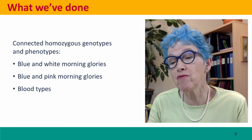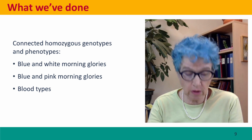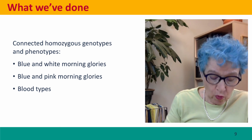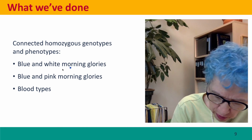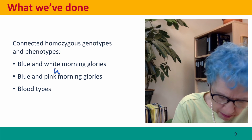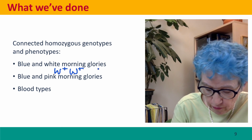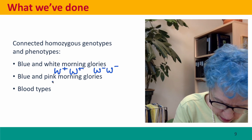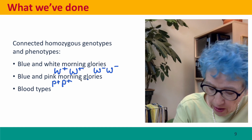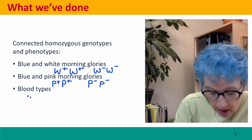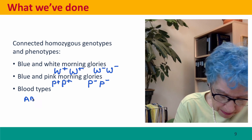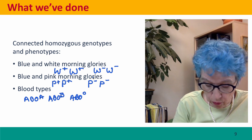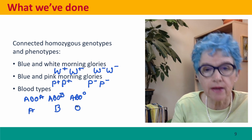So what have we done? We've begun connecting homozygous genotypes and phenotypes. We talked about three examples: blue and white morning glories — the white ones due to mutation of the W allele from W+W+ in wild-type to W−W− in white flowers; pink morning glories resulting from mutations in the P gene, where blue morning glories have P+P+ alleles and pink morning glories have P−P− alleles; and blood types with three different alleles — A, B, and O — which when homozygous are responsible for the corresponding ABO blood types.